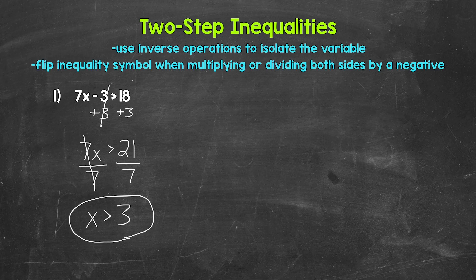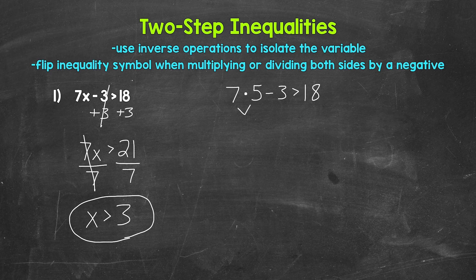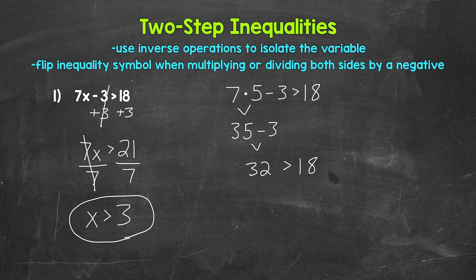So x can be any value greater than 3. Let's check by plugging in a value greater than 3 — let's use 5. So 7 times 5 minus 3 is greater than 18. 7 times 5 gives us 35, and 35 minus 3 gives us 32. 32 is greater than 18, so that works. We are correct. Our answer is x is greater than 3.